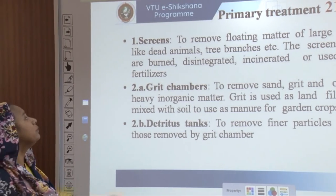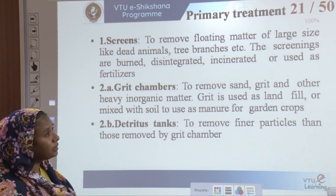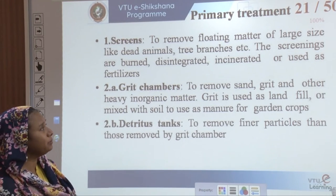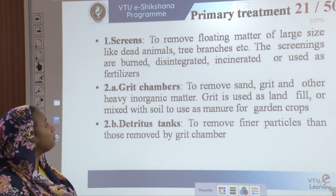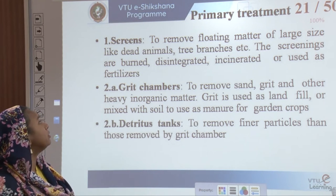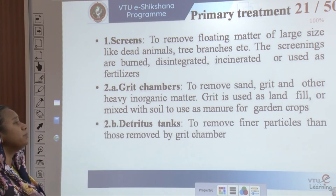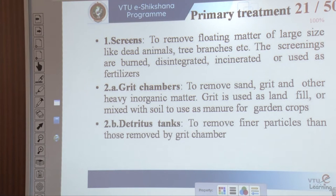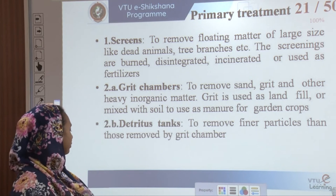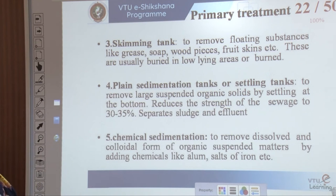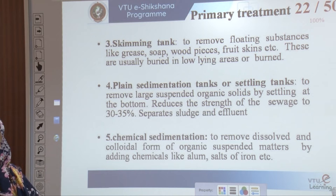In primary treatment, screens are used to remove all floating matter of large sizes like dead animals, tree branches, and plastic waste. The screenings are burnt, disintegrated, incinerated, or used as fertilizers. Grit chambers remove sand, grit, and heavy organic matter; this grit is used as landfill or mixed with soil as manure for garden crops. A detritus tank removes finer particles than those removed by grit chambers. Then we skim all floating substances like grease, soap, wood pieces, and fruit skins, which are usually buried in low-lying areas or burnt.